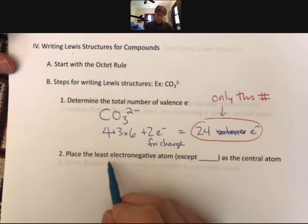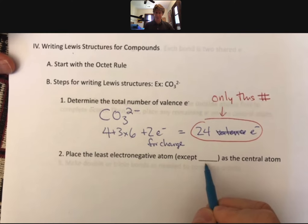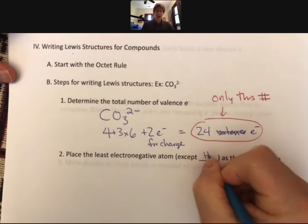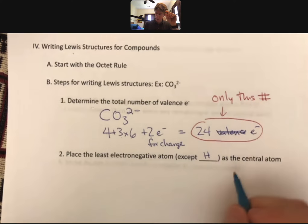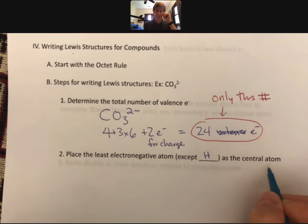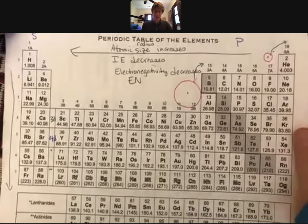And so counting up this number is very important, too. So if you make a mistake, it will throw off your entire Lewis structure. But hopefully that won't happen, especially after all the practice we're going to get. Alright. Place the least electronegative atom except hydrogen. Hydrogen will only ever form one bond, and so it cannot be a central atom. Now let's review our electronegativity. I've got my periodic table right here.